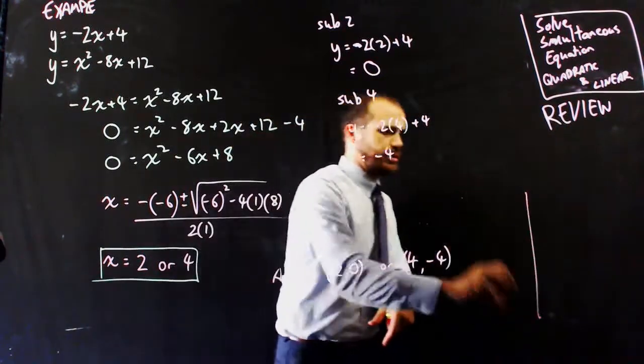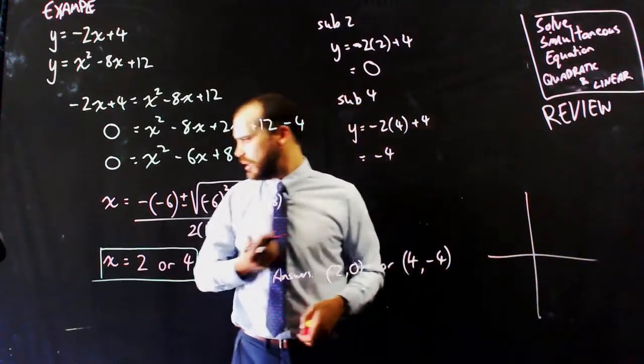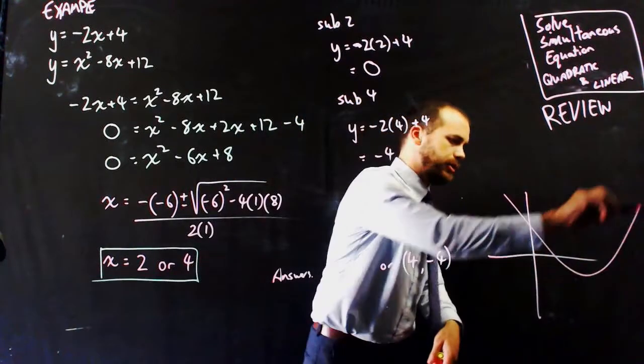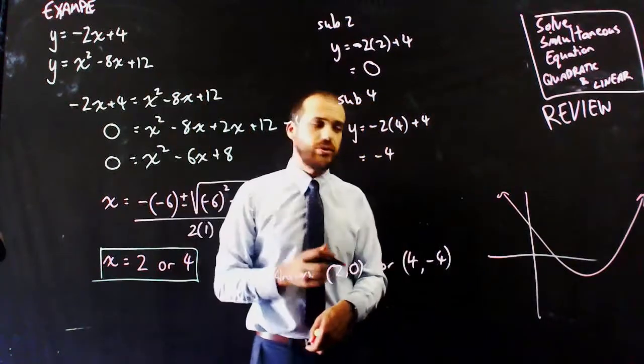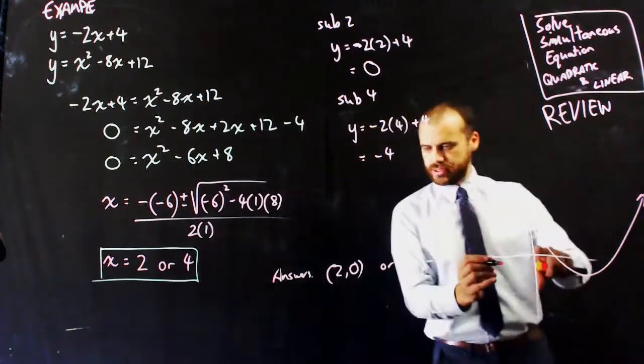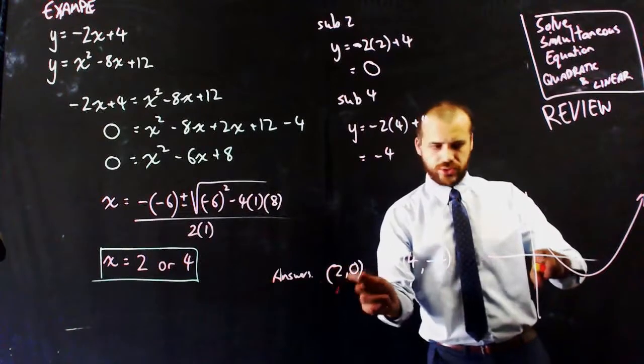Now, what that means for us is that there's probably some sort of quadratic that looks something like, I don't know, like that. And y = -2x + 4.